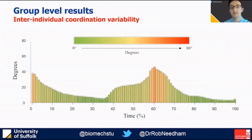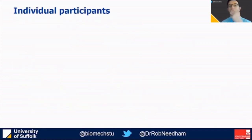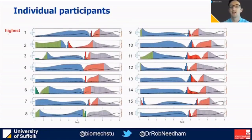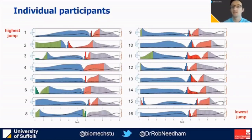To do that, we can plot the 16 individual participants ranked from the highest jump height through to the lowest. We can see that there are a number of commonalities between individuals, which is useful from a coordination profiling perspective. We also see that the control often differs even when coordination is similar.